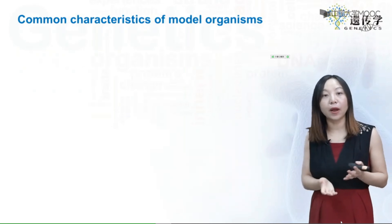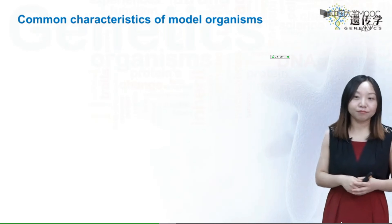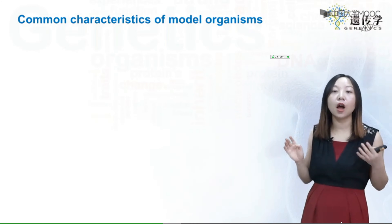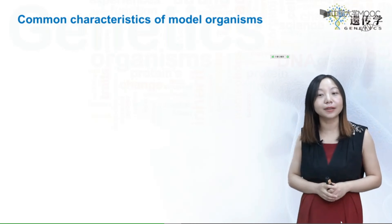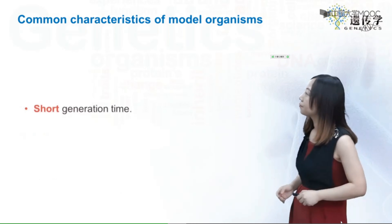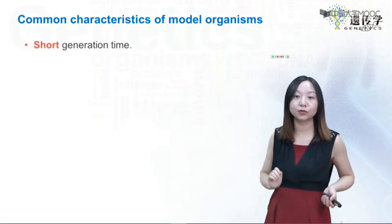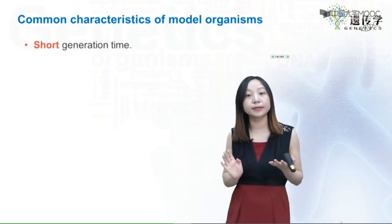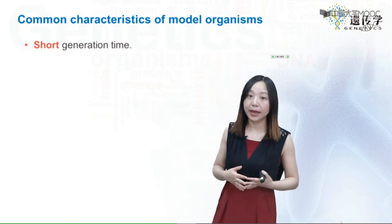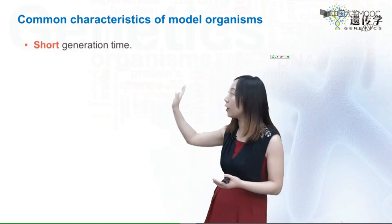Now let's summarize some common characteristics of model organisms. Out of tens of thousands of species on Earth, what makes these organisms unique stars in genetic studies? First, they should have a short generation time. If you're working on genetics, you need to do many crosses and analyze offspring, and if generation time is too long, genetic analysis takes too long. Ideally, generation time should be just weeks to months.